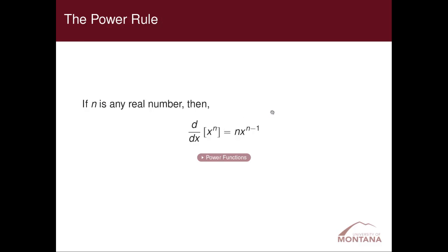Let's take a look at the power rule. We're going to develop a rule for any function x to the n, where n is a real number. If we take the derivative with respect to x of x raised to the n, where n is a real number, then that derivative function is equal to n times x raised to the n minus 1.